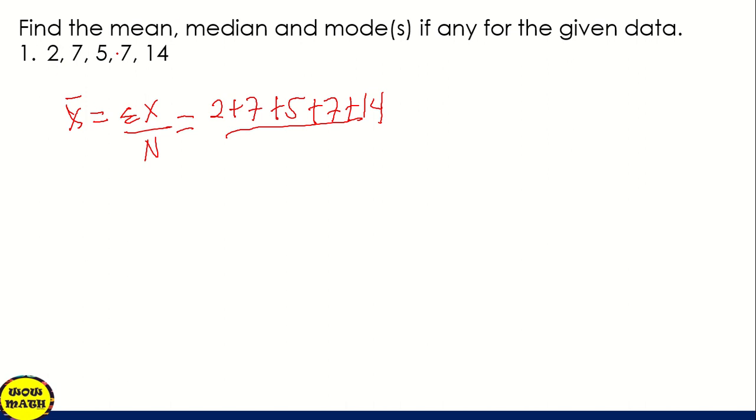So 1, 2, 3, 4, 5. So then it's all over 5. And then, so get the sum that is 35 over 5.